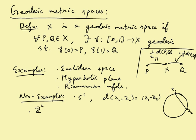Another non-example: take Z^2 inside R^2, the integer lattice with distance inherited from R^2. Here there are no paths at all, so you can't correct it so easily. Instead, you can just embed it in a geodesic metric space. This was the background setup in which we can define delta hyperbolicity, or Gromov hyperbolicity.